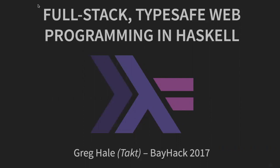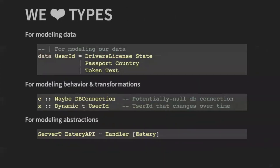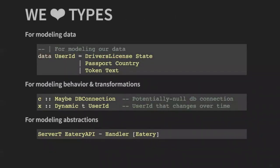What ties all those goals together? Why do I even care about using Haskell on the front end? It's types. We love types — all Haskellers love types, and rightly so. Types give us a really nice way to model our business logic and the data itself. So a user ID in our case is exactly one of three things: it's either a driver's license, a passport, or a token. If it's a driver's license, we know for sure that it has some associated state data.